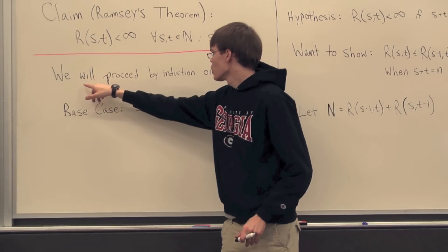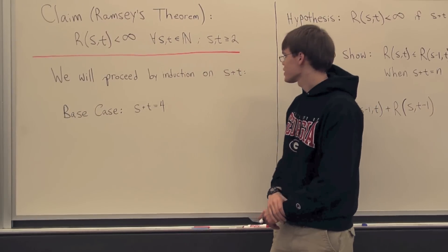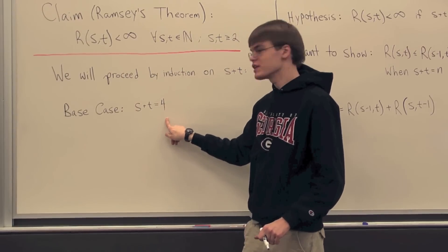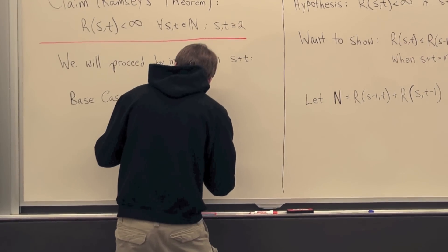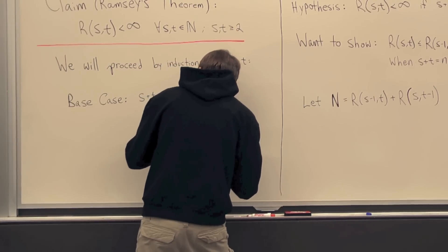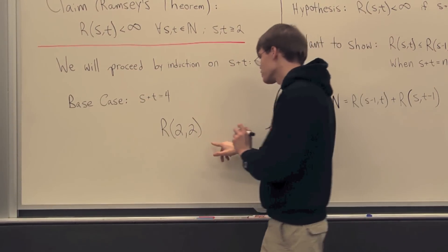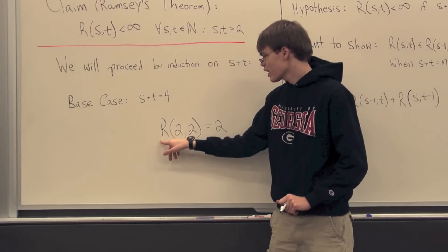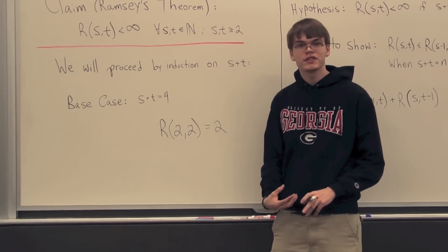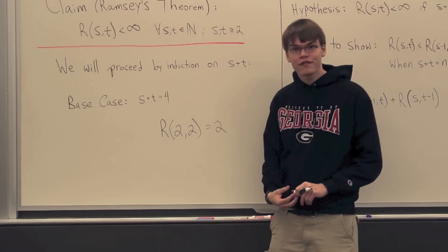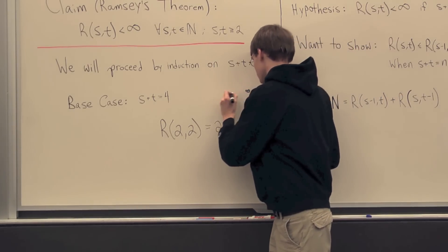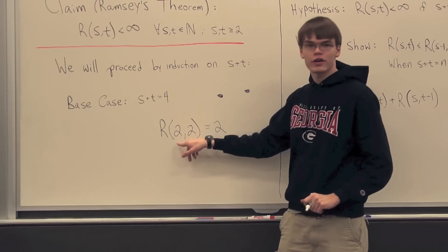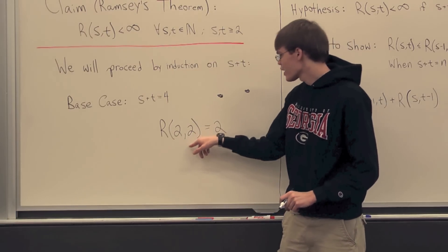To prove this theorem, we want to proceed by induction on s plus t. Our base case is when s plus t is equal to 4, so we're looking at R(2,2), and we claim that R(2,2) is equal to 2. What this is saying is that 2 is the minimum number of vertices such that on the complete graph K_2, any two-coloring on this graph is going to have a monochromatic subgraph of size 2 in either red or blue.